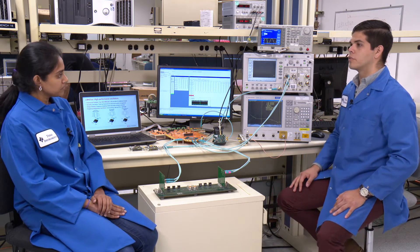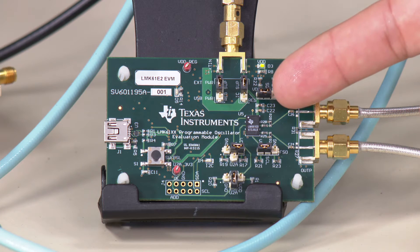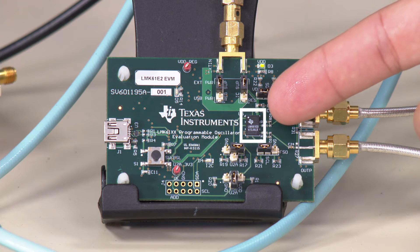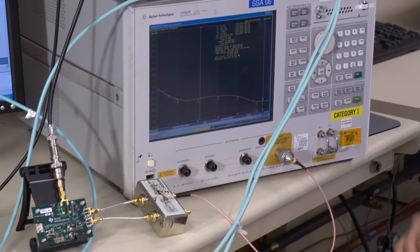Well Deepa, we have two experiments showing the performance of the LMK 6100 family. This is the LMK 61E2 fully programmable oscillator EVM. Here you see the IC, connected to the Balun and the E5052B signal source analyzer.